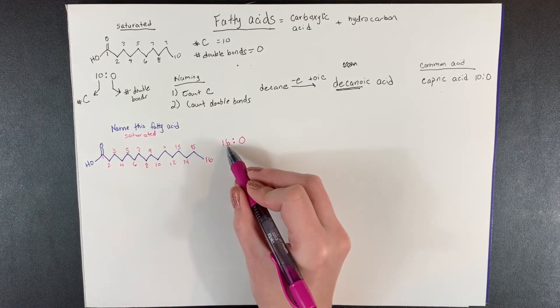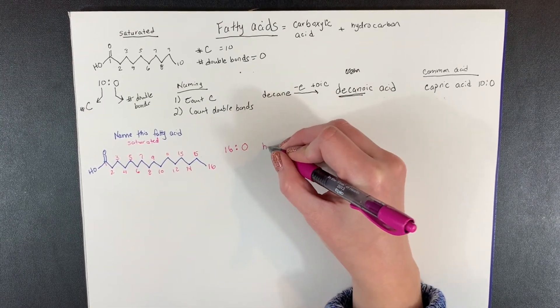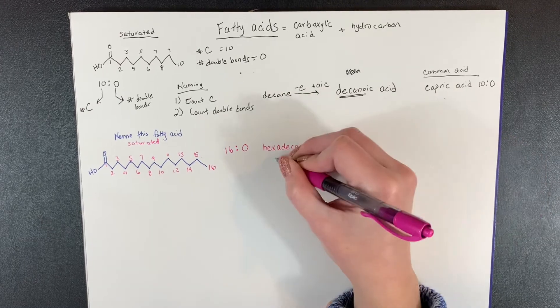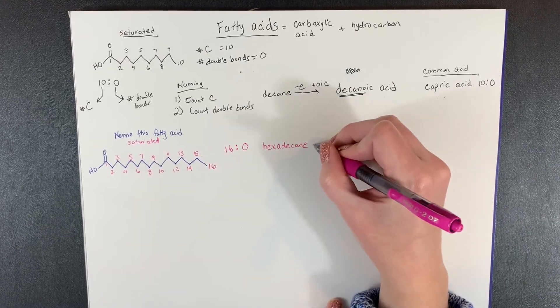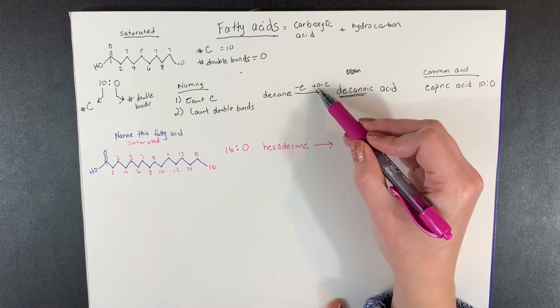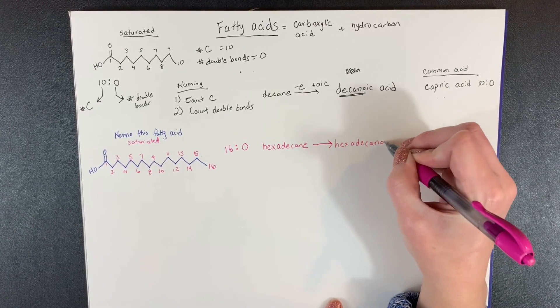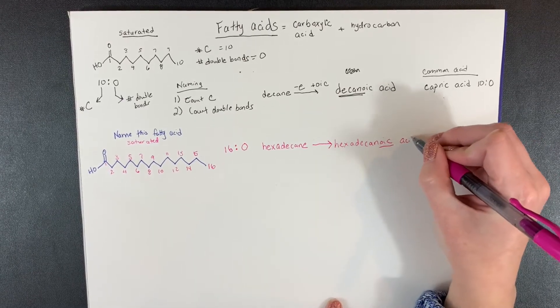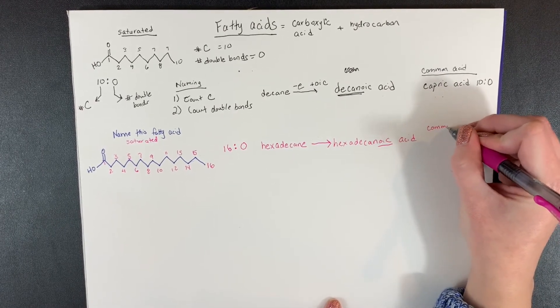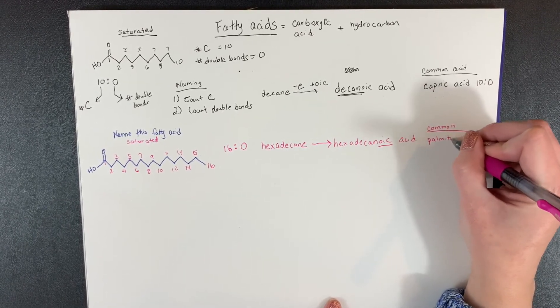So now we have to think, what is the name for a 16 carbon, or 16 carbons in a hydrocarbon? So if it was just carbons, not a fatty acid, we might call this hexadecane. For hexadecane, 16 carbons. So if we need to change this to show it's a fatty acid, we subtract the E and add OIC to the ending. So we have hexadecanoic acid. Now that's one way to name it. Again, you can see if you look up on a reference table, this does have a common name and this is palmitic acid.